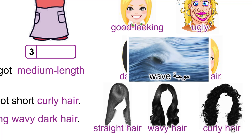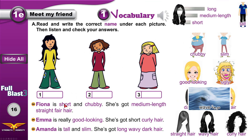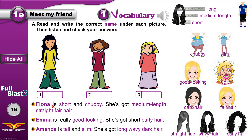Read the descriptions and write the name under the picture. Fiona is short, chubby, with medium-length straight fair hair. The only one with fair hair is this girl — she is also chubby and a little bit short. Emma is good-looking with curly hair. Amanda is tall and slim with long wavy dark hair.